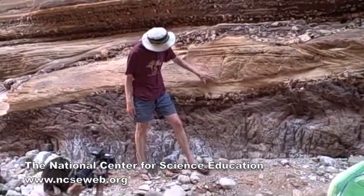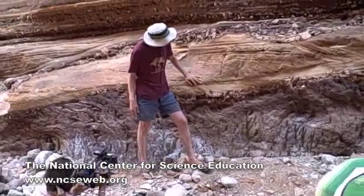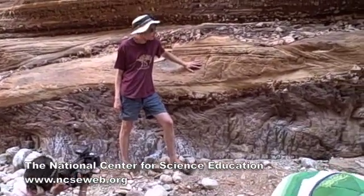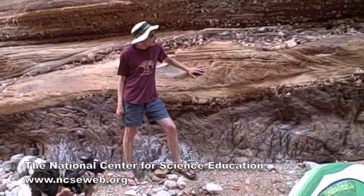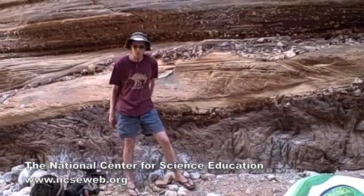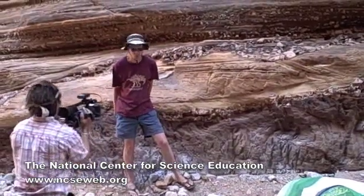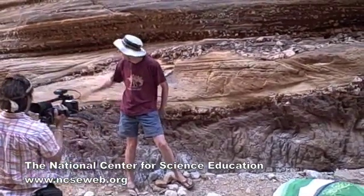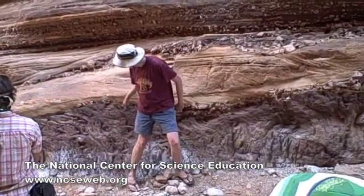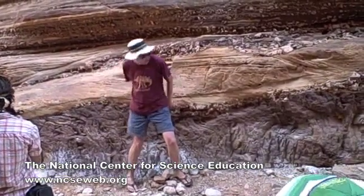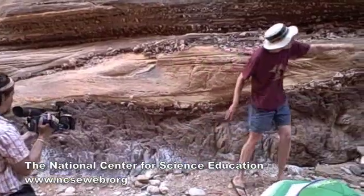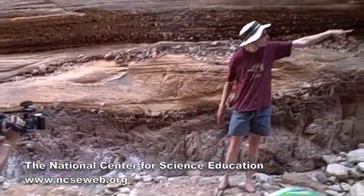So these crossbeds tell you you're in a beach environment or somewhere near shore. In fact, we're right on the shores of an ancient island. Notice that the Great Unconformity here isn't a flat line — it comes down low, then rises up, and is really high right there.